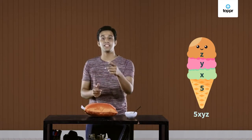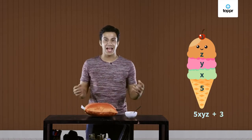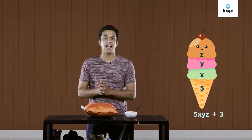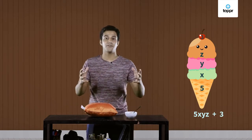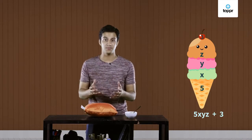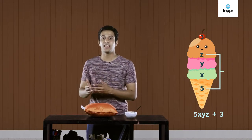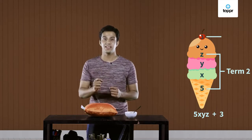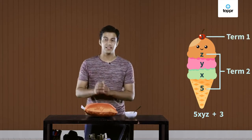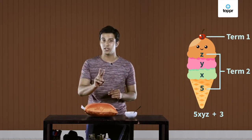What about the topping on your ice cream? Let's say we add a cherry to the top — we've added something extra to the ice cream. All the parts that we add together to form an expression are called terms. So in the expression 5xyz plus 3, 5xyz is one term while 3 is another. Hence, this expression has two terms.